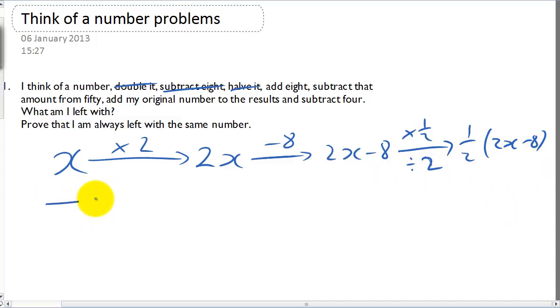So this now I'm going to simplify. Half times 2x gives me x. Half times minus 8 gives me minus 4.